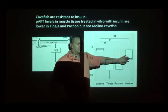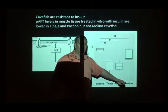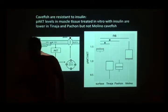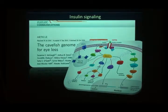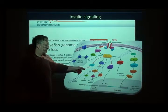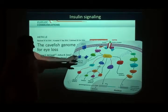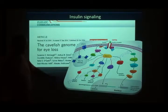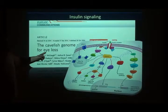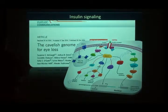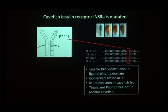So where is that insulin resistance? What's the genetic change? We have two pieces of information: we know the insulin signaling pathway, and we have the cave fish genome. You can go to the cave fish genome and ask, for every protein in the insulin pathway, is there a difference in sequence between surface fish and cave fish? One just jumped out at us: the insulin receptor. In Tinaja and Pachón — not Molino — there's a proline to leucine change in amino acids in the insulin binding domain of the insulin receptor.